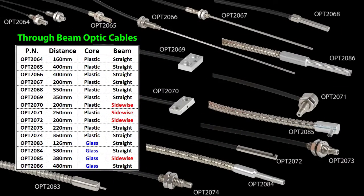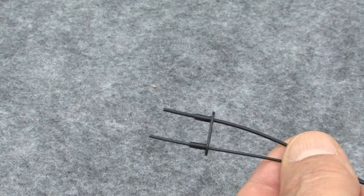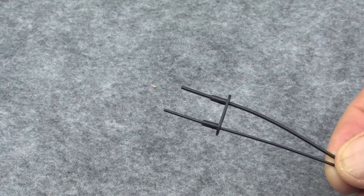The through beam OPT series optic cables, when used with the OPT series amplifiers, can be used out to about 19 inches. Some of the cables have a smaller diameter fiber core which gives you a tighter bending radius but also gives you a shorter detection distance because it collects less light.